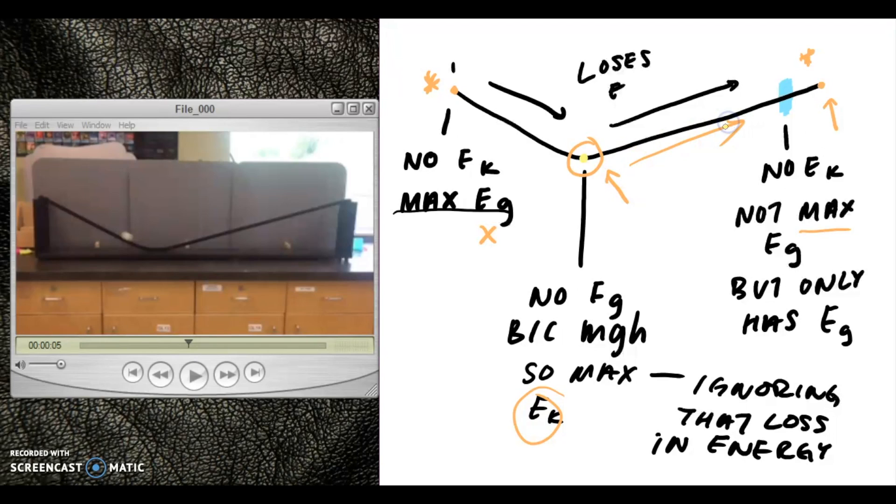to kinetic energy. And then once again, going up the ramp, having no kinetic energy at this blue point before it turns around at this blue point only having gravitational energy because there's no velocity at that point. And so in other words, the whole demonstration shows that change in energy between kinetic and gravitational.